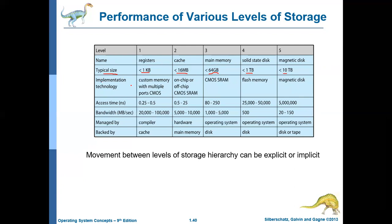Regarding implementation technologies: registers and cache memory are implemented using CMOS technology. Main memory is also implemented using CMOS SRAM technology. Solid state disks are one form of flash memory — similar to what a pen drive uses; the pen drive is also made up of flash memory.